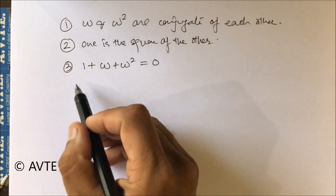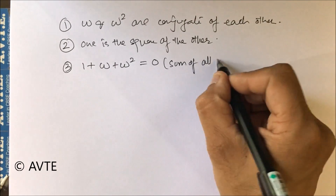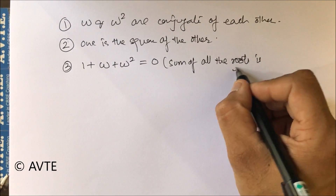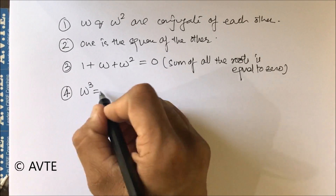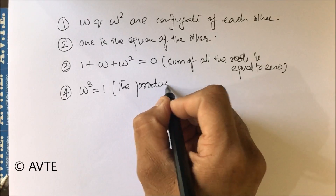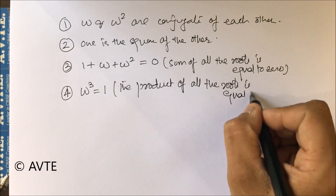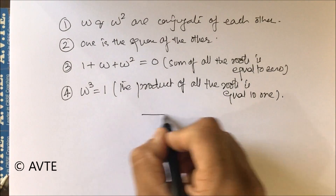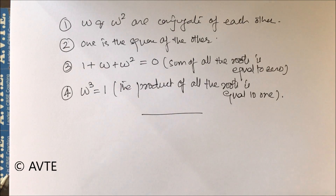The highly used property is: 1 plus omega plus omega square equals zero, that is the sum of all the roots is equal to zero. Also, omega cube is equal to 1, which is the product property. These properties are used in complex numbers, determinants, and matrices, and this rule is very important and widely used. We hope you have got the idea of cube root of unity.